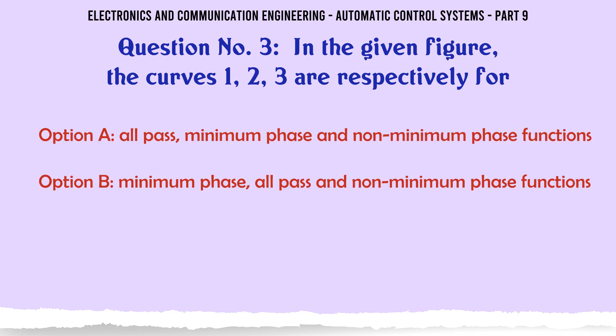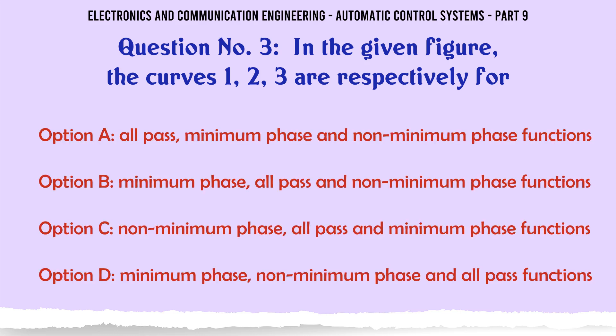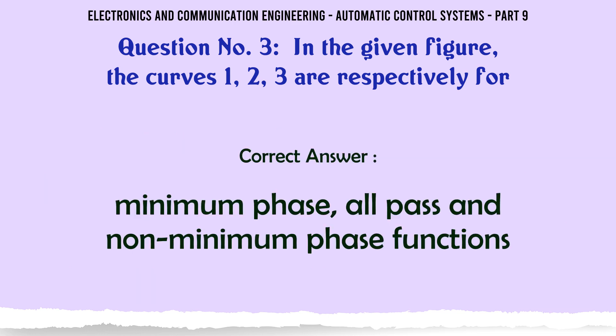In the given figure, curves 1, 2, 3 are respectively for: A. All pass, minimum phase and non-minimum phase functions; B. Minimum phase, all pass and non-minimum phase functions; C. Non-minimum phase, all pass and minimum phase functions; D. Minimum phase, non-minimum phase and all pass functions. The correct answer is: Minimum phase, all pass and non-minimum phase functions.